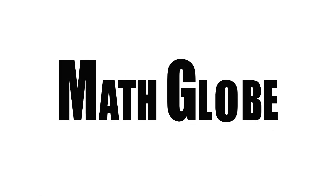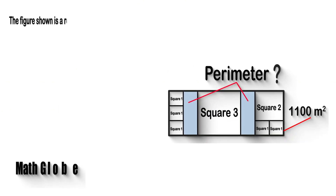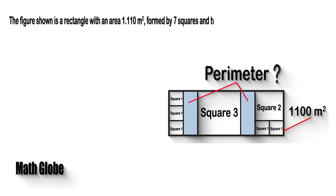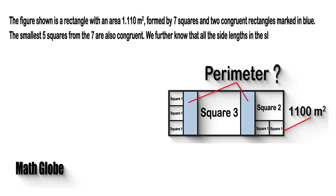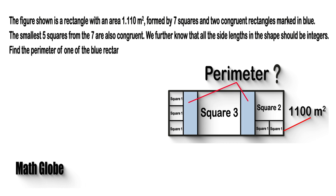Hi, this is MathGlobe. The figure shown is a rectangle with an area of 1110 square meters, formed by seven squares and two congruent rectangles marked in blue. The smallest five squares from the seven are also congruent. We further know that all the side lengths in the shape should be integers. Find the perimeter of one of the blue rectangles for the longest possible side length of the squares.